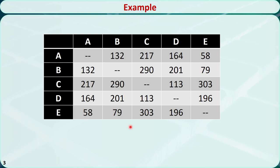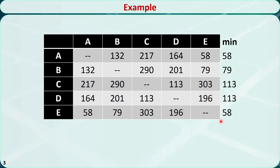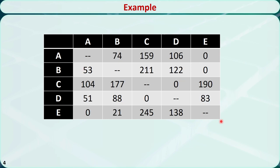For the first row, the minimum value is 58. For the second row, the minimum value is 79, and so on. We subtract the minimum value for each row, and this is what we get.